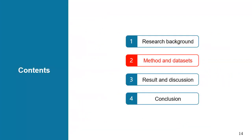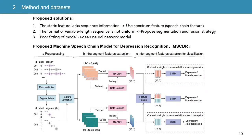The next part covers the method and datasets. The figure shows the proposed model MSCDR. First, MSCDR uses dynamic speech chain features for the first time to solve the problem of static features lacking sequence information. Then, a segmentation and fusion method is proposed to extract intra- and inter-segment features from variable-length speech without cropping and redundancy, which solves the problems of inconsistent formant of variable-length speech sequences. Finally, we use a deep neural network to improve the fitting ability of the model.